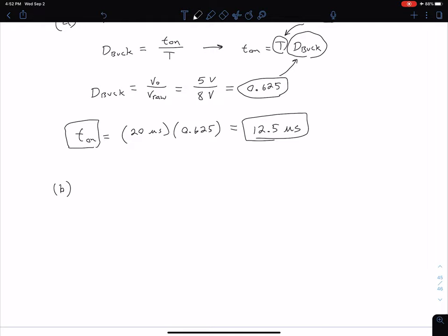Rearranging an equation slightly from a previous video, we can say that the inductor value is equal to, in the numerator we have V_raw times D_buck times the quantity of 1 minus D_buck. And then in the denominator, we have 8C, F squared, and delta V_buck. So delta V_buck is our ripple voltage here.